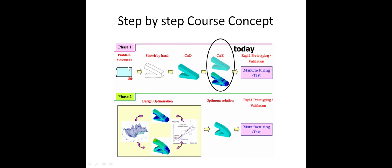As per that problem statement, we are going to create a sketch based on input conditions. With help of any software like CAD, SOLIDWORKS, CATIA, or any modeling software, we are going to create a 2D sketch and then convert it as a 3D model. After that we simulate it with help of CAE — Computer Aided Engineering — to solve the problem. This is the actual methodology.